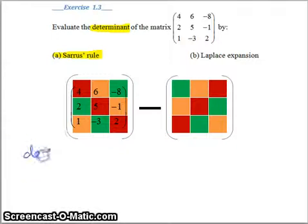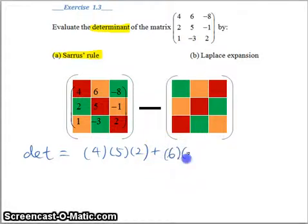So to find the determinant, let me take the red color elements and multiply. Next, let me take the orange elements and multiply. Next, take the green elements to multiply.